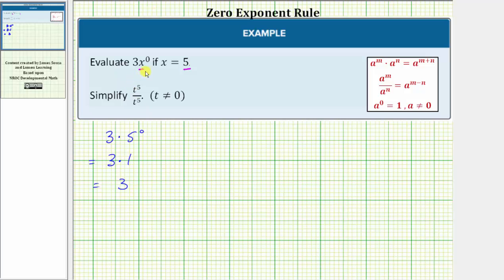Notice the expression 3x^0 would be equal to 3 times 1, which equals 3 for any value of x, except when x equals zero, because zero raised to the zero power is undefined or in indeterminate form.